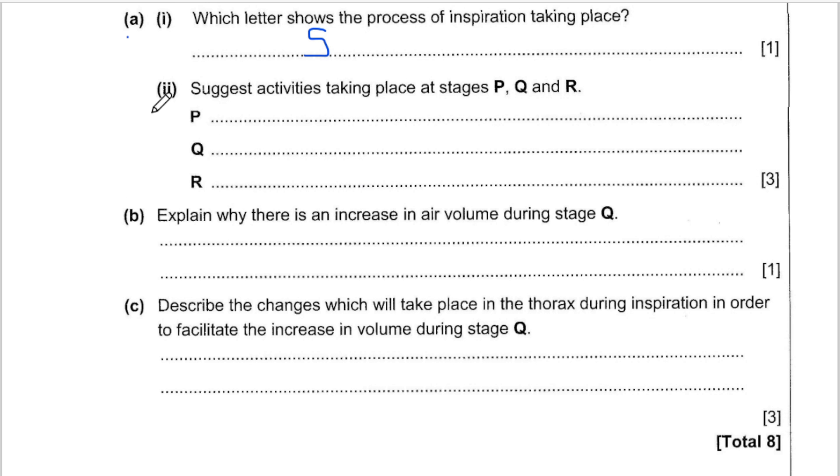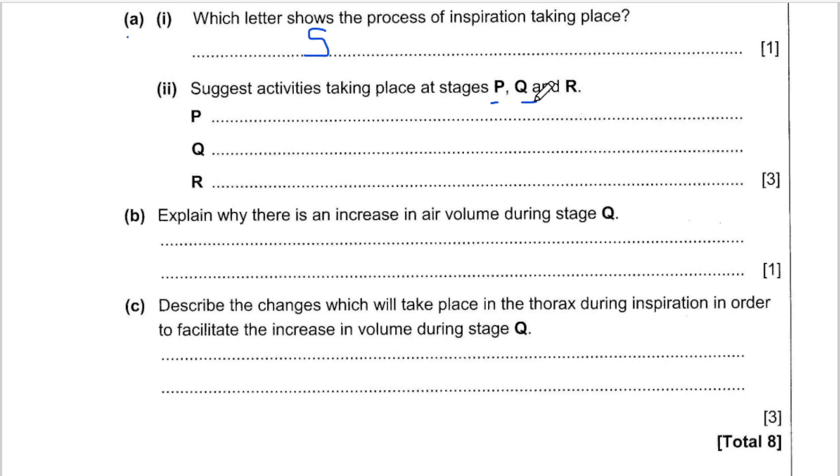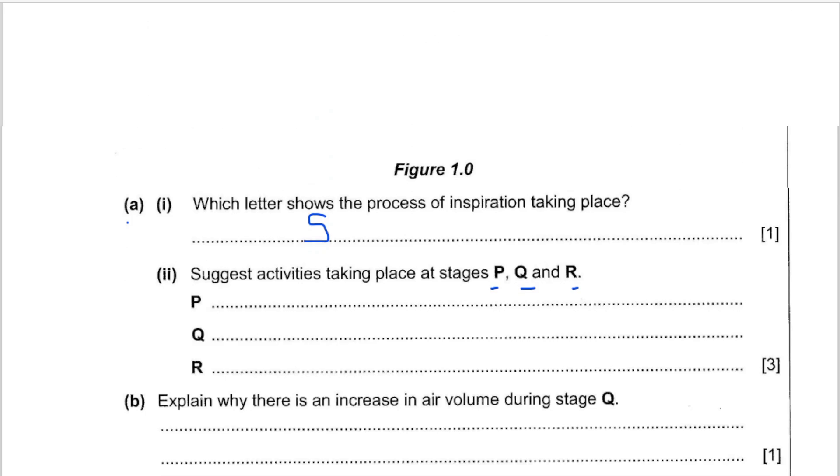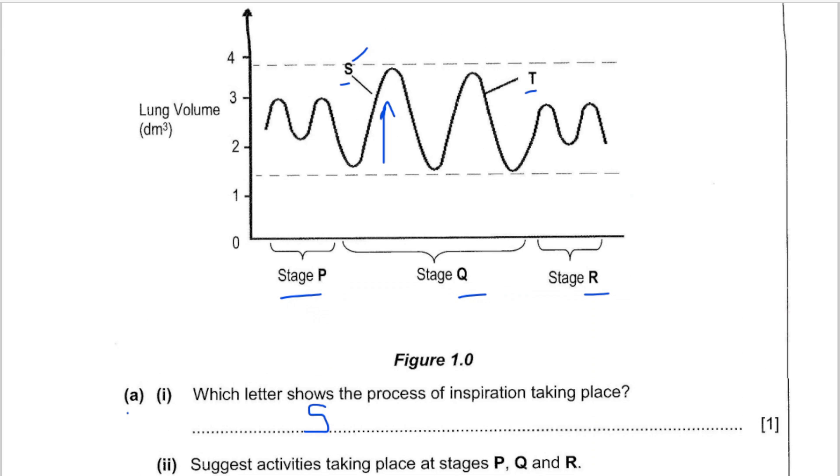Next part, suggest activities taking place at stages P, Q and R. If we go back to our diagram, we can see that here we have our stage P. We can see that here the individual, the volume is slightly low, so meaning that here the person is not breathing very fast, so a person most likely is at rest.